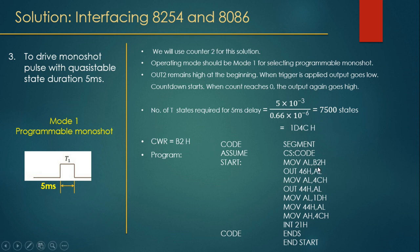Program for Part 3: move AL, B2H and OUT 46H, AL to configure the CWR. Then move AL, 4CH (lower byte of 1D4CH) and OUT 44H, AL to write to counter 2. Then move AL, 1DH (higher byte) and OUT 44H, AL to write the MSB to counter 2. The final instructions return control to the command prompt. This concludes the video.